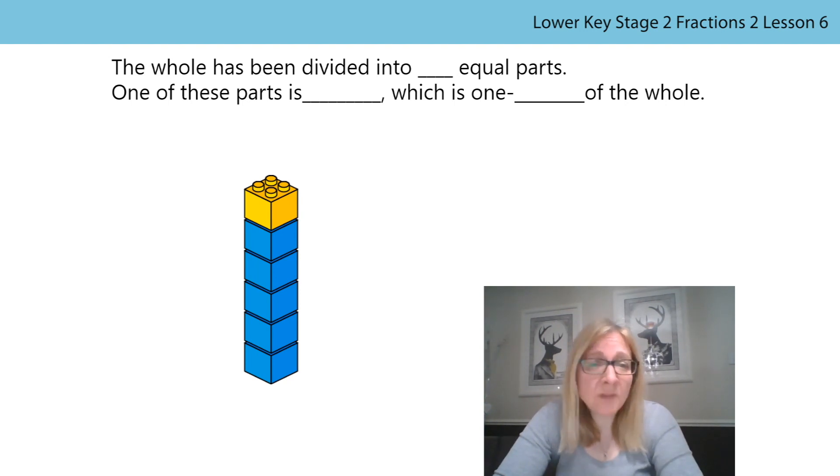How did you get on? Should we say them together? The whole has been divided into six equal parts. One of these parts is yellow, which is one-sixth of the whole. Well done if you got that correct.